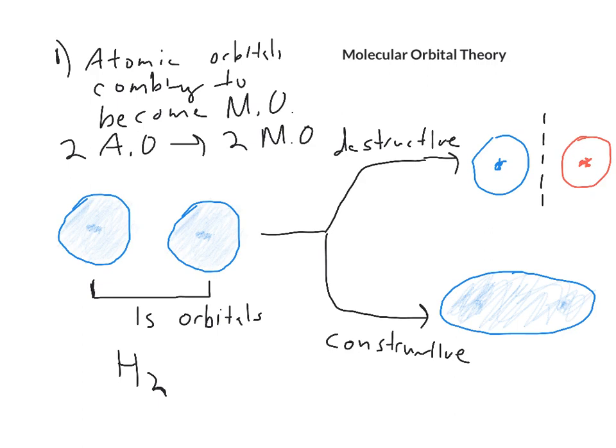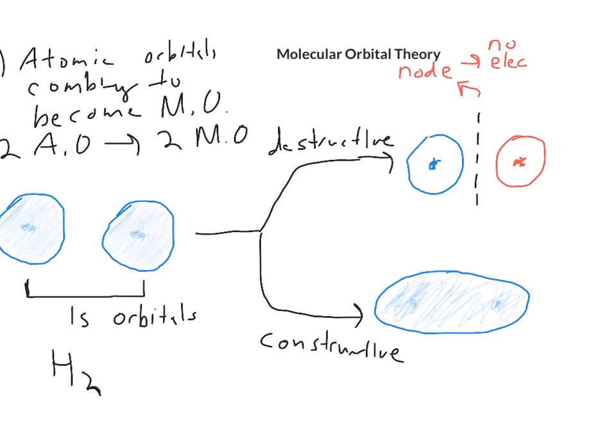One thing to point out: this region is called a node. What that is, is that is a place where there is no electron density. And the reason that the constructive combination of the orbitals is lower in energy—this is an energy scale, low energy, high energy—there are no nodes. The electrons, when they combine, the electrons can be anywhere in this region.